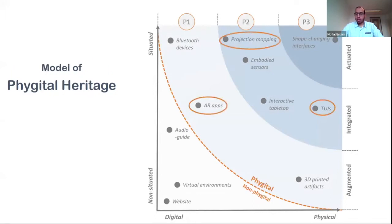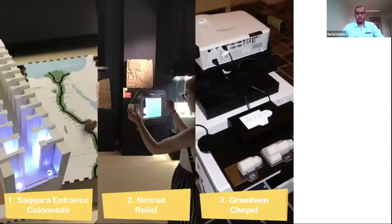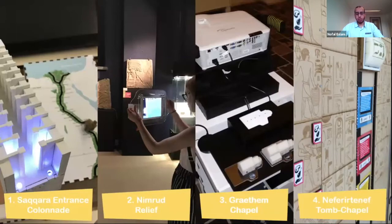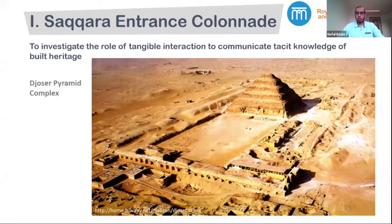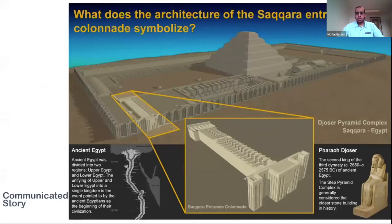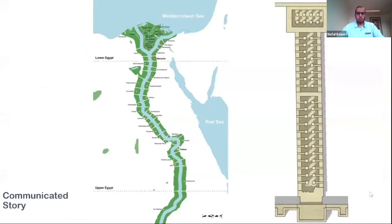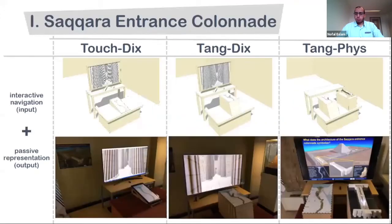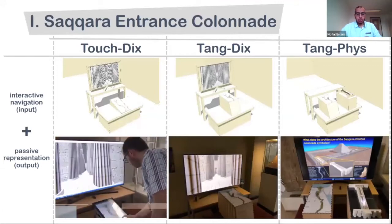In the second lesson, we investigate Vegetal approaches to communicate heritage information through four experimental case studies, mainly from collaboration with the Royal Museum of Art and History in Brussels. In the first study, we investigated the role of tangible interaction to communicate tacit knowledge of built heritage. Our case study is the Zoser Pyramid Complex, and the chosen story to be communicated was related to the entrance colonnade — it has been suggested that the architecture of the colonnade represented the map of ancient Egypt, with each niche representing one of the nomes, a territorial division of ancient Egypt.